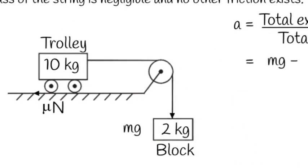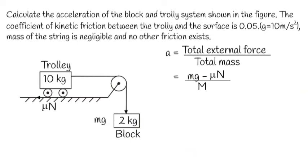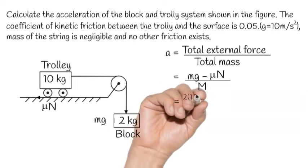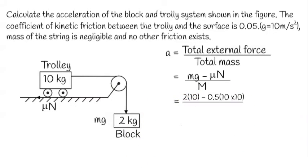So it will be mg minus μN upon capital M, which will be equal to 2 times 10 minus 0.05 times 10 times 10 upon 10 plus 2.